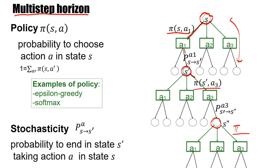You take action A3, and then the stochasticity of the environment leads you to state S''. Then it's again your policy choice P(S', A3) that may determine where you go, followed by another intrinsic branching ratio. So there's a network graph of transitions with two stochastic components: one is the policy, and the other is the environmental stochasticity.